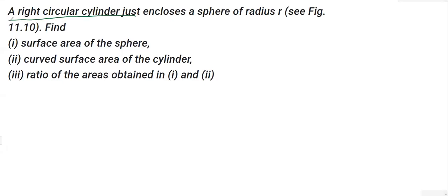The question says a right circular cylinder just encloses a sphere of radius r. So what we are going to do is make a right circular cylinder. Let's say I'm going to make a right circular cylinder.